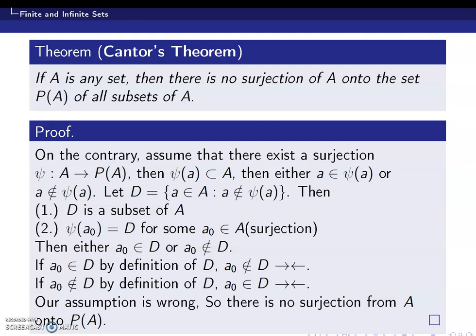Our assumption is wrong because we cannot proceed further. If a₀ belongs to capital D, it implies a₀ does not belong to capital D. If a₀ does not belong to capital D, it implies a₀ belongs to capital D by the definition of D. So our assumption must be wrong. We assumed there exists a surjection from A to P(A), and this leads to contradiction, which implies there exists no surjection from A to P(A). This is what Cantor's theorem is all about. Thank you.